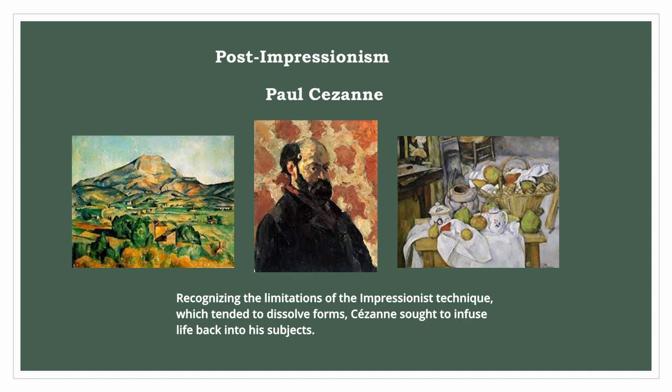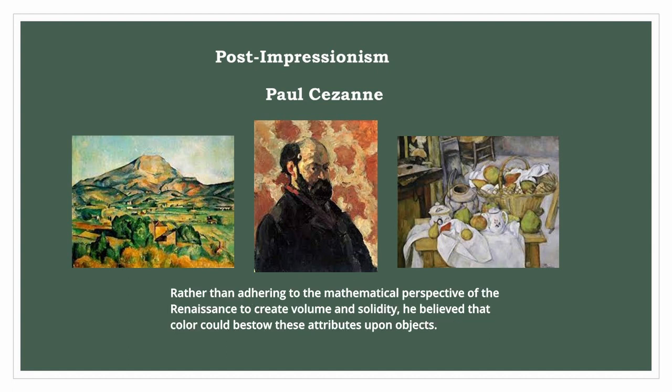Recognizing the limitations of the Impressionist technique, which tended to dissolve forms, Cézanne sought to infuse life back into his subjects. Rather than adhering to the mathematical perspective of the Renaissance to create volume and solidity, he believed that color could bestow these attributes upon objects.